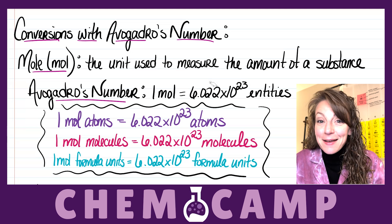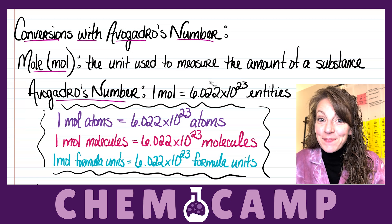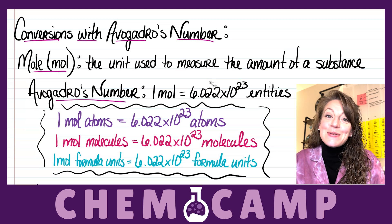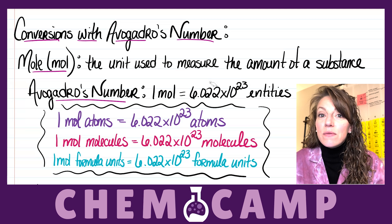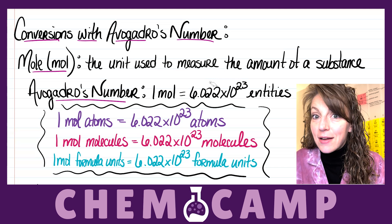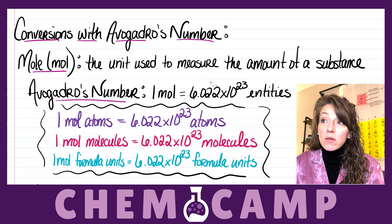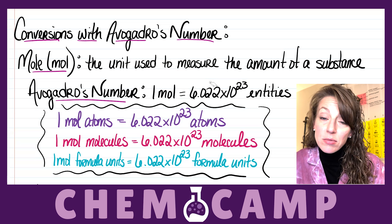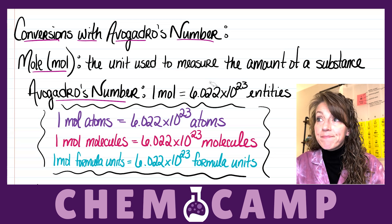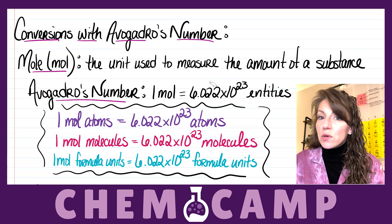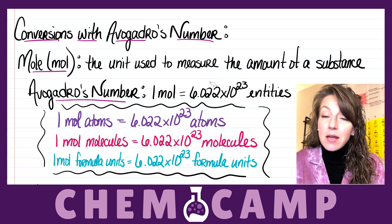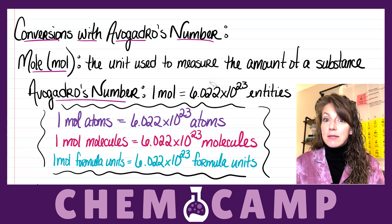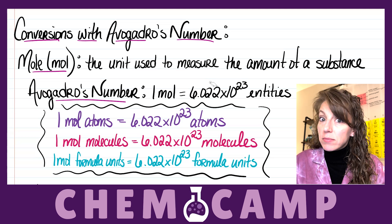In chemistry, we use Avogadro's number to count atoms, molecules, and formula units. If we have one mole of atoms, we have 6.022×10²³ atoms. One mole of molecules gives 6.022×10²³ molecules, and one mole of formula units gives 6.022×10²³ formula units. Let's see how this is applied to problems.